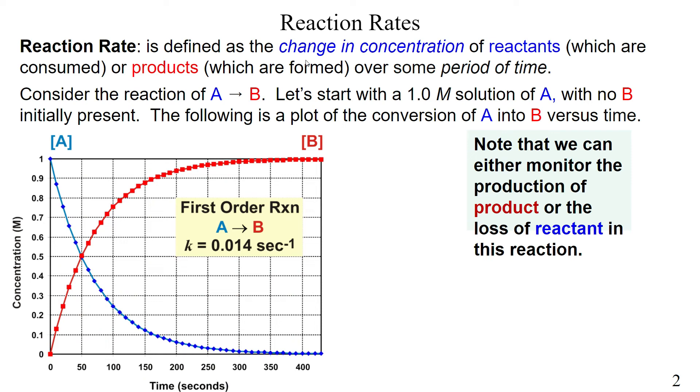A reaction rate is defined as the change in concentration of reactants. So basically, we're talking about these reactants that are being consumed. Reactants, of course, are going to be consumed. Now, we also look at products. Because once again, this is the change in concentration of reactants or products. So basically, products are what's being formed over a period of time. So this is our reaction rate. Change in concentration over a period of time. And in this case, we're always going to be looking at reactants or products.